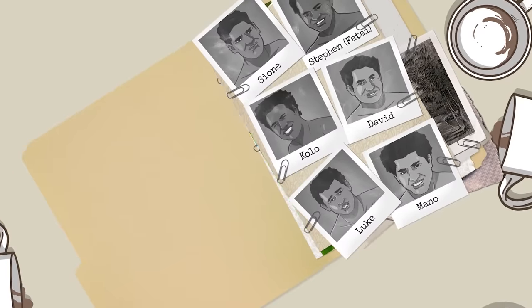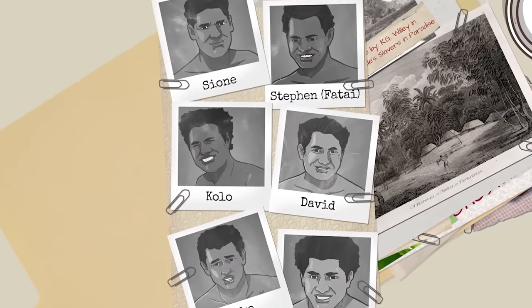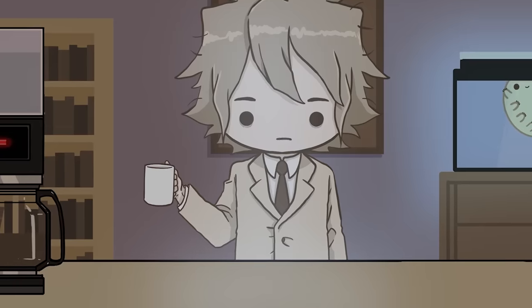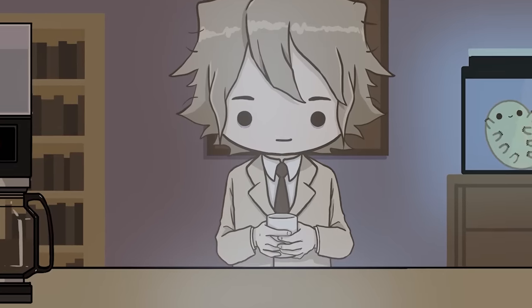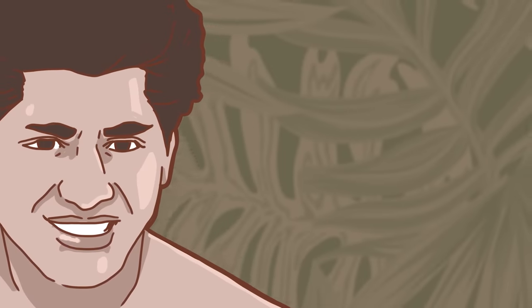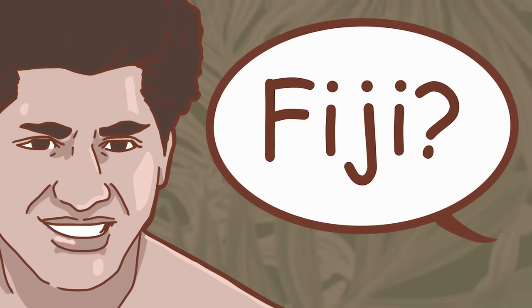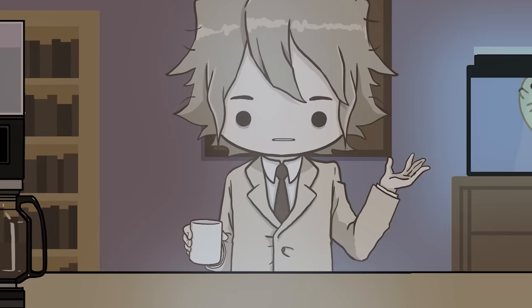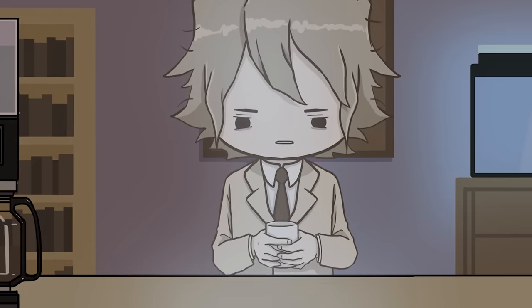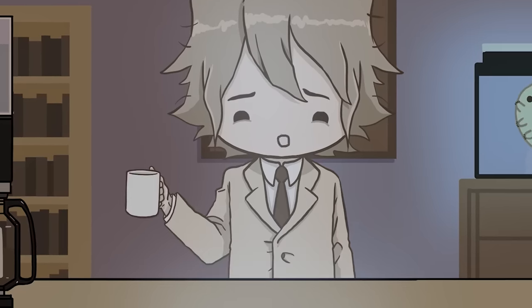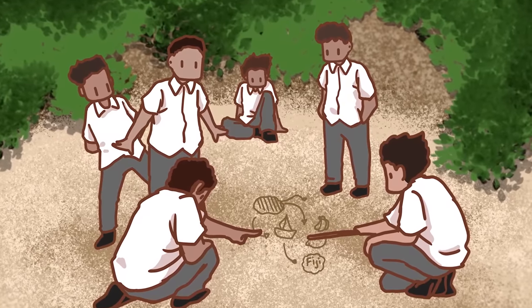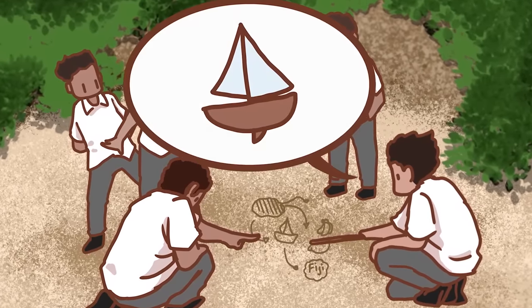For teenage friends Sione, Steven, Kolo, David, Luke, and Mano, truancy was far more interesting than fluency. Mano, who was 15 and one of the eldest, was asked if he wanted to go to Fiji. He said yes, and that was all they needed to begin preparations. The boys didn't really care where they went, they just wanted to see the world. The escape was soon drafted, but they still had one major problem. None of them had a boat.